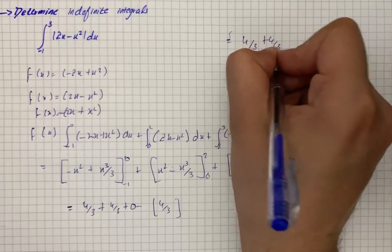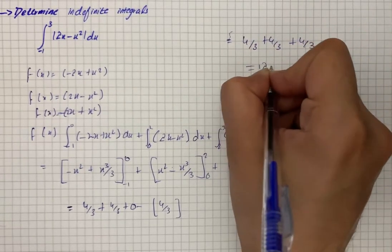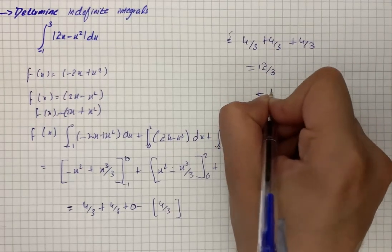4 by 3 plus 4 by 3 plus 4 by 3 gives us 12 by 3, and our final solution is 4.